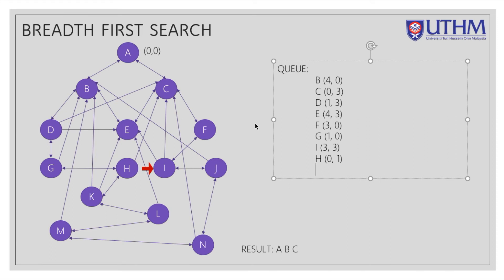After G we look at I. I is connected to F and J. Since we already have F, we queue up J. I is at current state (3,3). For J, we use the transfer method — the y jug transfers 1 liter of water to the x jug — resulting in (4,2).